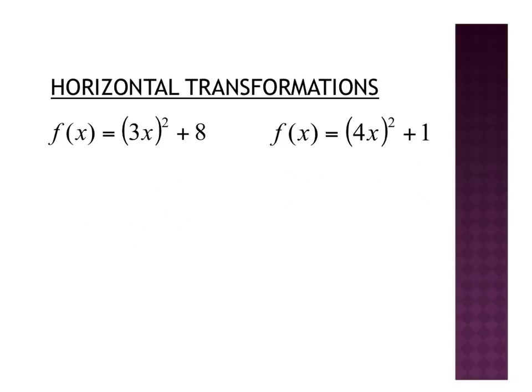The last two will be combo examples. Inside, I have a 3 that's being squared, so that's a horizontal transformation. Thinking opposite, I flip it to get 1/3, so I have a horizontal compression by 1/3. I also have an 8 being added outside the function, which is vertical. When adding on the outside, you think regular — so it goes up by 8.